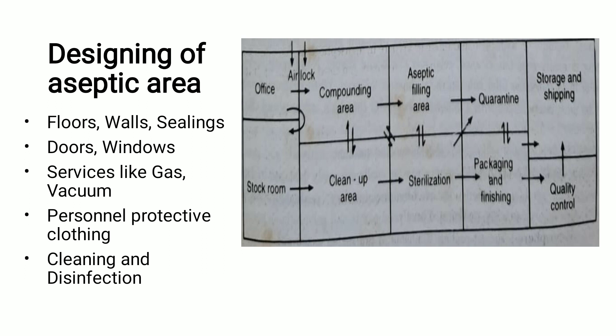Looking at the layout diagram for an aseptic area, there is only one-directional movement throughout. A person entering from the office through an airlock door can only move toward the compounding area or the stock room. From the stock room, movement goes to the cleanup area, sterilization, or packaging. From the compounding area, the flow goes to aseptic filling and then quarantine. Movement in reverse — for example, from sterilization back to cleanup, or from packaging back to sterilization — is not permitted.